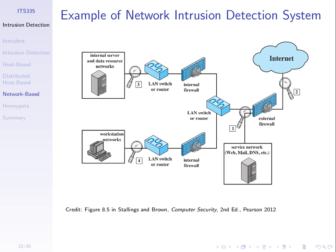Those are the three general types of intrusion detection: host-based and network-based. Network-based looks at the packets through the network — not what happens on the computer, not which files were accessed or CPU utilization — just packets. Looking at the expected profile: what packets do we expect to be sent through the network? When there's something unexpected, that's an indicator of an intrusion.